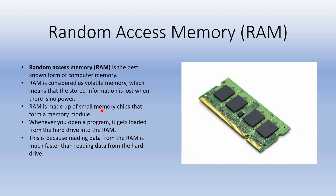Suppose you are playing a game from your computer's hard drive or streaming a movie from the internet. All of the data that your processor needs to play the game or watch the movie is stored in RAM so your processor can access it quickly. Once you are done and close it, the processor replaces that data with the next task. RAM can slow down your computer if there is not enough of it — the processor then has to keep going back to the hard drive or the internet to obtain the information again.